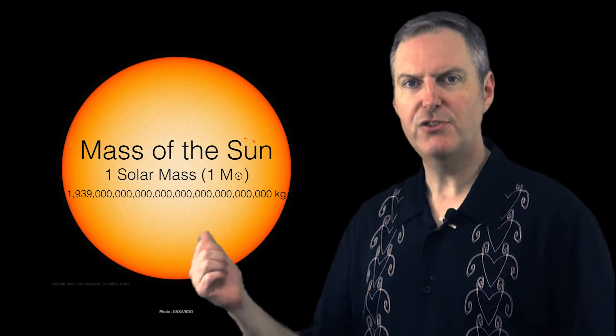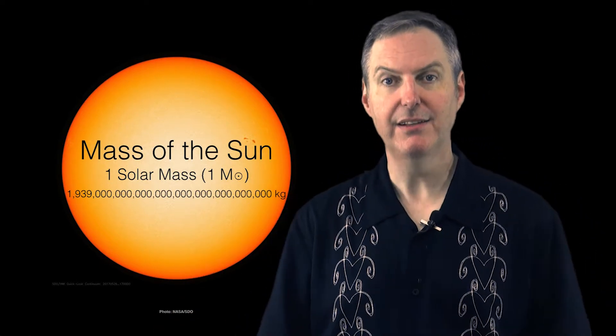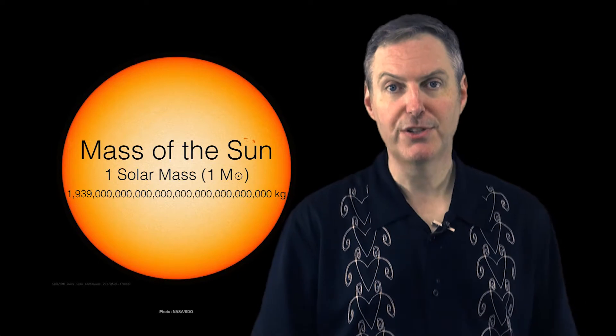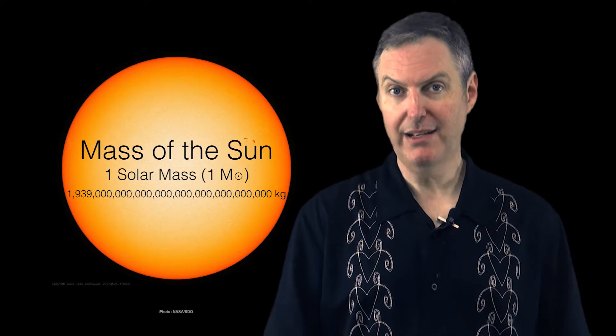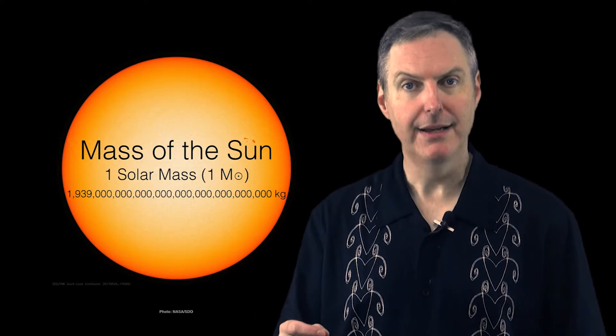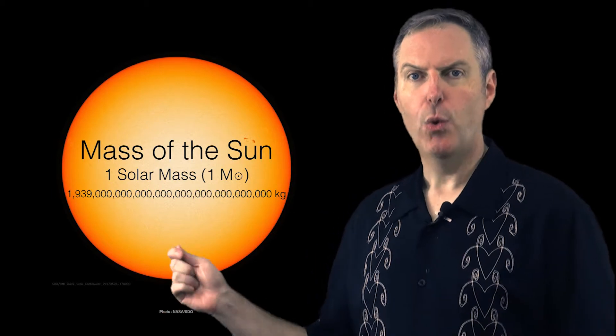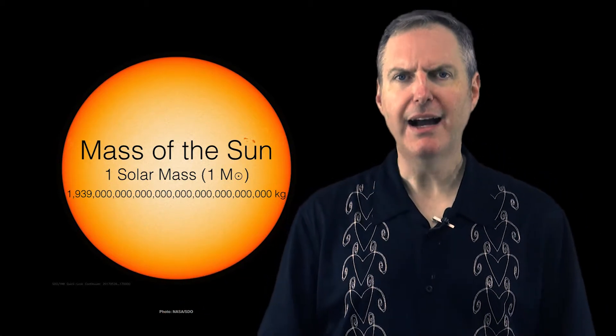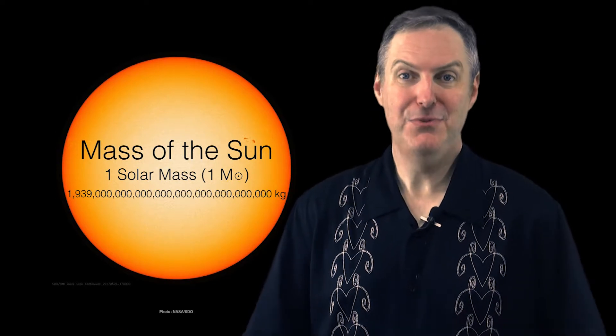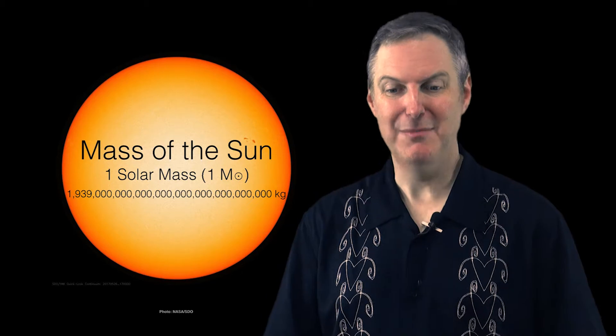Let's go ahead and show you now the mass of the sun in kilograms, and as you can see, it's a very large number. Now, to say this number in English, I had to look this up on Wikipedia. But this reads as one nonillion nine hundred thirty-nine octillion kilograms. I never used those terms before and had to look them up.